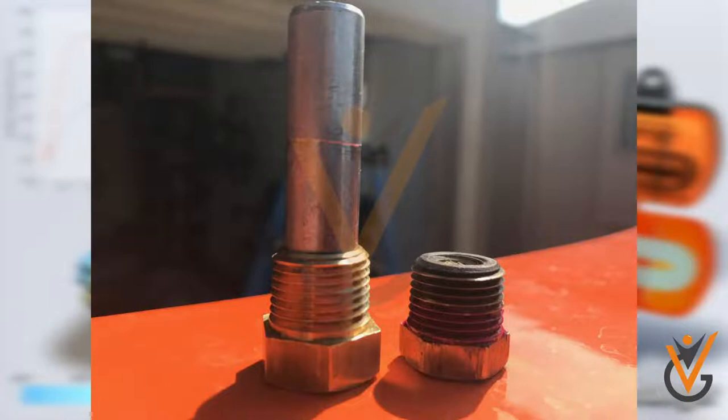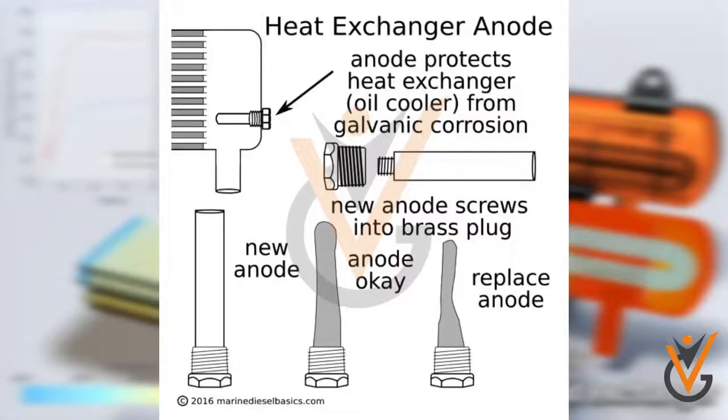Sacrificial anodes are provided to avoid corrosion of the heat exchanger. Soft iron or mild steel anodes can be fitted in the water boxes, and provided they cause no turbulence, they will provide cathodic protection and a protective film.